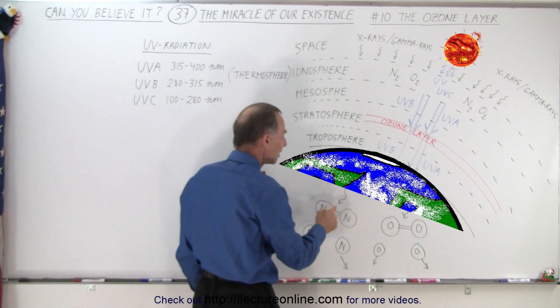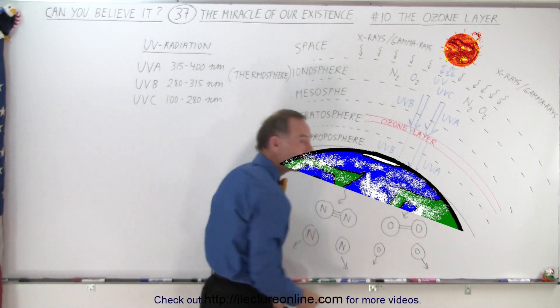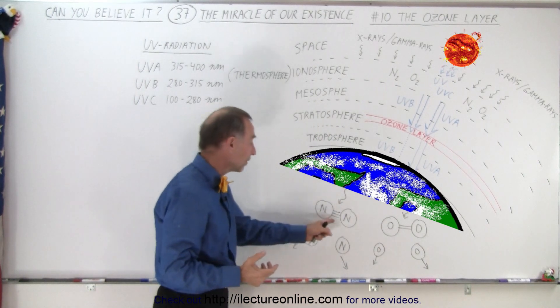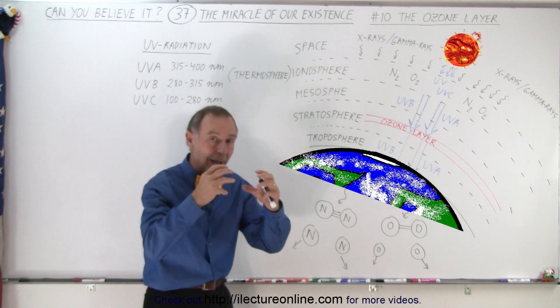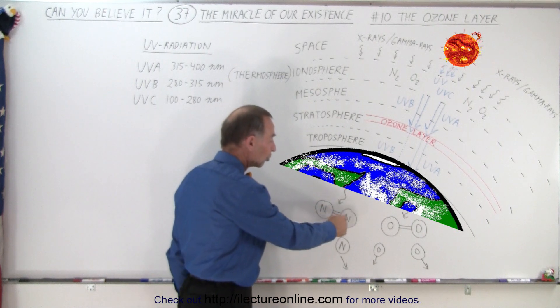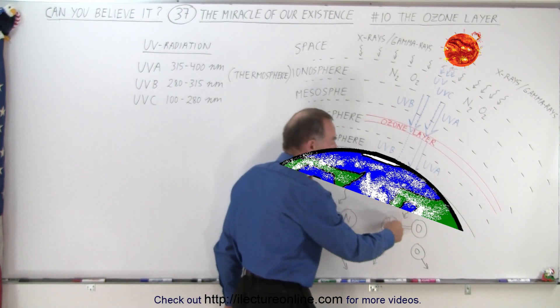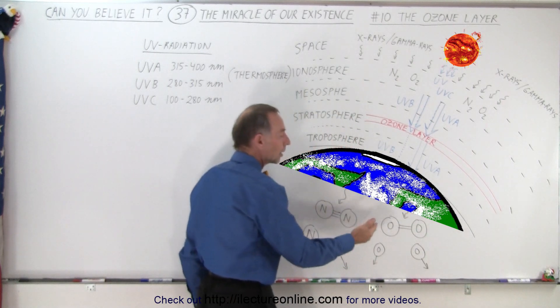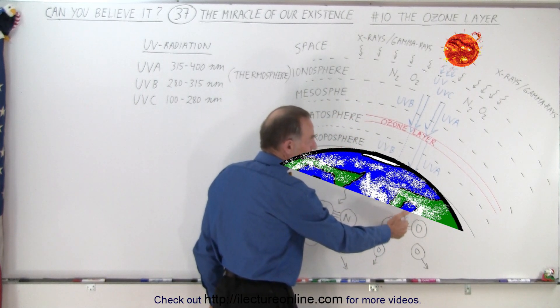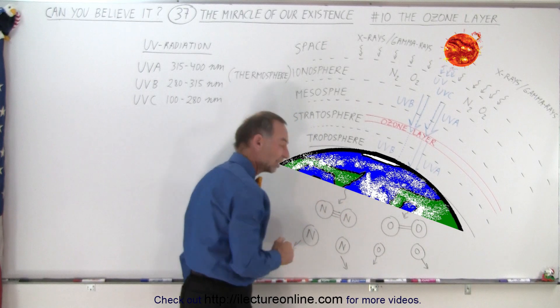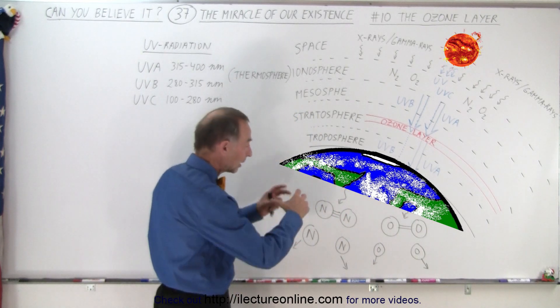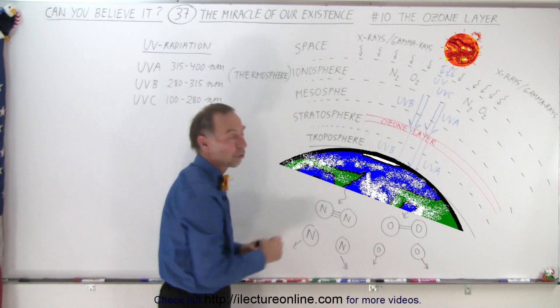our atmosphere contains nitrogen and oxygen molecules. These are diatomic molecules, meaning they have two atoms to a single molecule, and in the case of nitrogen, they form a triple bond, and in the case of oxygen, they form a double bond. With a double bond, four electrons are shared, and with a triple bond, six electrons are shared, forming fairly strong bonds.